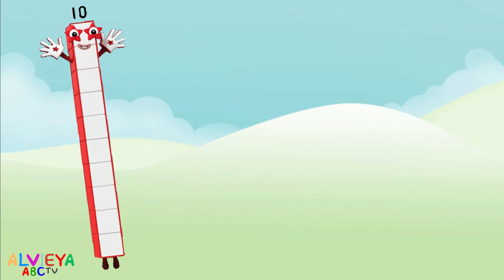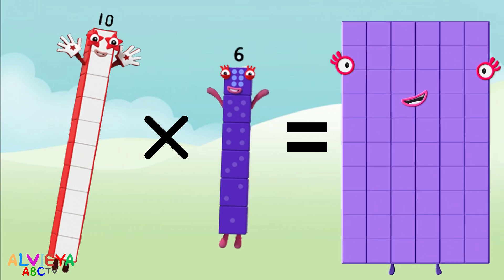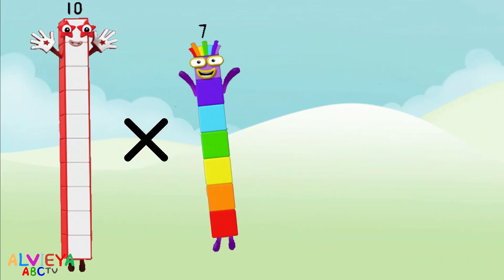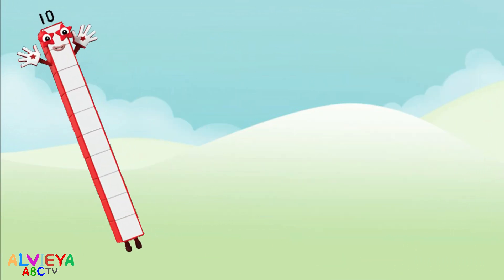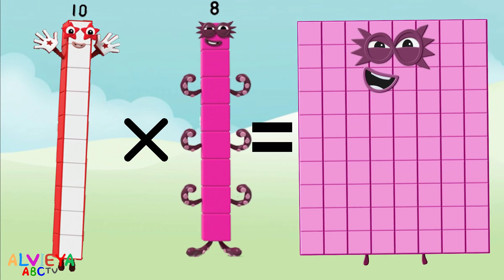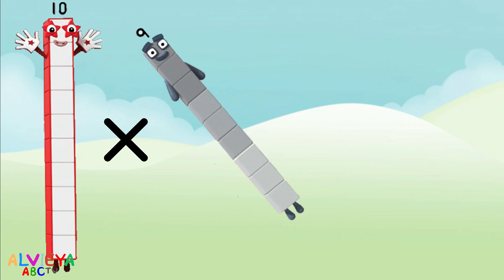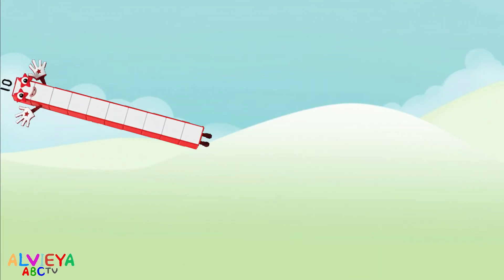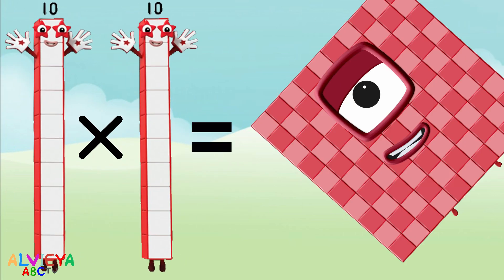Ten times six equals sixty. Ten times seven equals seventy. Ten times eight equals eighty. Ten times nine equals ninety. Ten times ten equals one hundred.